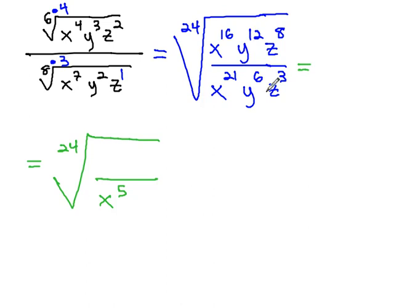For the y's, 12 minus 6 is 6, positive staying in the numerator. For the z's, 8 minus 3 is 5, positive staying in the numerator.